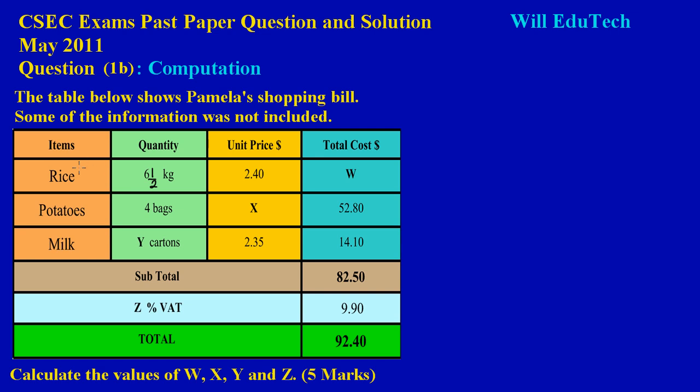Here they are asking us to find the total cost for six and a half kilograms of rice being sold at $2.40 per kilogram. This is pretty easy for part one. Let's write a general expression that represents the total cost. I can say that the total cost really is the quantity, Q for quantity, times the unit price, UP for unit price, and that gives us the total cost.